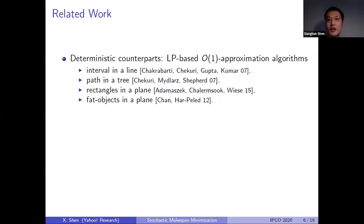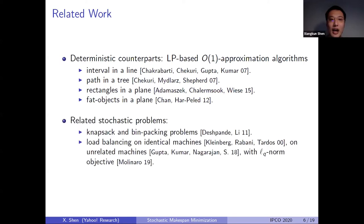Some related work: the deterministic counterparts of all our applications are well studied, and constant approximations are known. There are also stochastic combinatorial optimization problems studied before, like the knapsack problem, bin packing problem, and load balancing on identical machines, unrelated machines, and L_q norm objective. In this work, we borrow ideas from the load balancing problem, mainly the deterministic surrogate used there and the way of forming the LP relaxation.